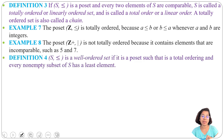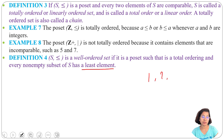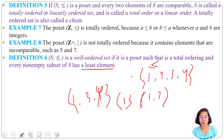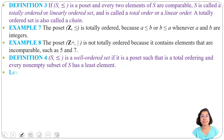Definition 4 is about well-ordered sets. S is a well-ordered set if it is a poset that is also a total order, and every non-empty subset of S has a least element. For example, taking {1, 2, 3, 4} under ≤, it is a total order, and any subset such as {1}, {1,2}, or {1,3,4} has a least element.